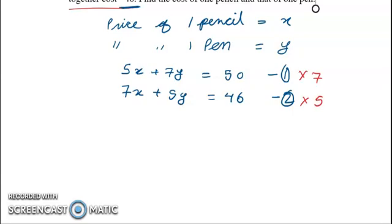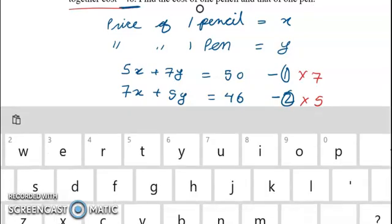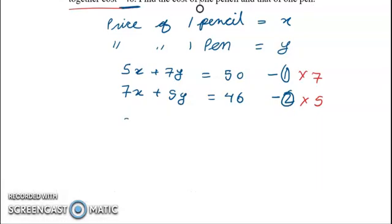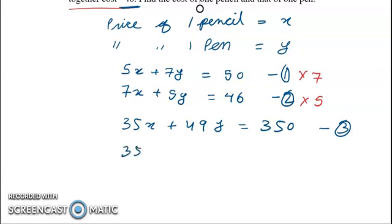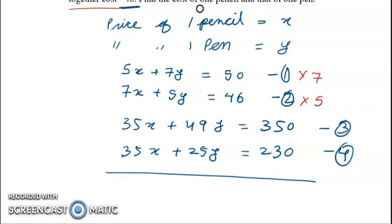To solve this, we will multiply equation number 1 by 7 and equation number 2 by 5. Equation 1 becomes 35x plus 49y is equal to 350 — this is equation number 3. Equation 2 becomes 35x plus 25y is equal to 230 — this is equation number 4.